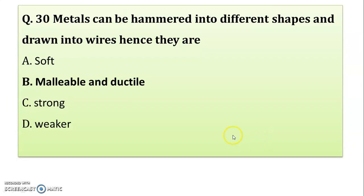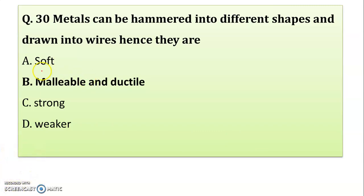Metals can be hammered into different shapes and drawn into wire. Hence, they are — soft? Malleable and ductile? Strong? Weaker? When a metal is hammered into different shapes it is called malleable, and when wire is drawn from it, it is called ductile. Correct answer: malleable and ductile. You must know the properties of metals.